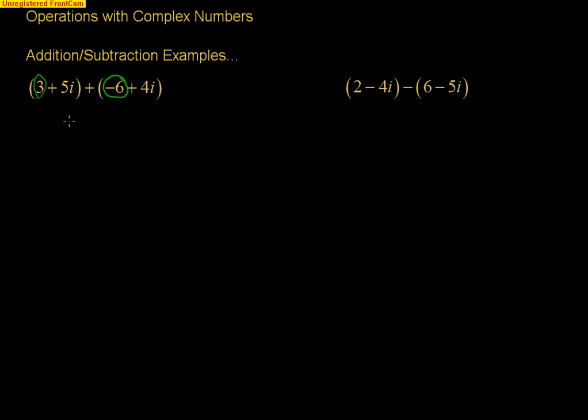So, all you have to do is combine the like parts. So, the 3 and the negative 6, those are your real parts. So 3 and negative 6 is going to be negative 3. And then 5i and 4i, that's plus 9i. So, there's your answer just for adding complex numbers there.